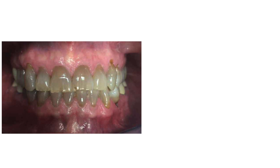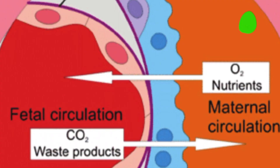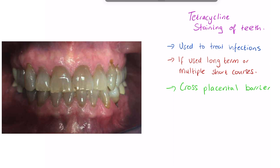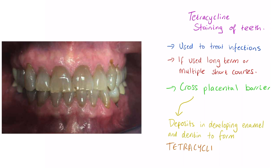When used over a long period of time or multiple short courses, tetracycline can actually cross the placental barrier. The presence of tetracycline in the blood means it deposits in developing enamel and dentin, where it forms a tetracycline calcium orthophosphate complex.